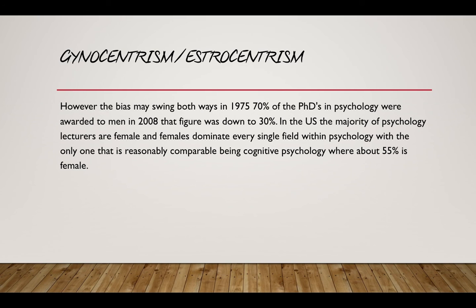Even cognitive psychology, which is the most male-dominated field within the subject, sees 55% of those in the field as female. So psychology is a female-dominated subject. It is wholly unrepresentative, and therefore it's likely that the consequences are going to be some form of either alpha or beta gender bias — perhaps because of the types of fields that women are specialising in, which may not be that interesting from a male perspective.